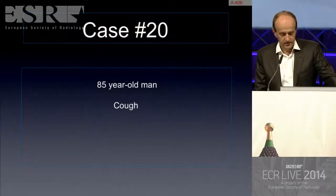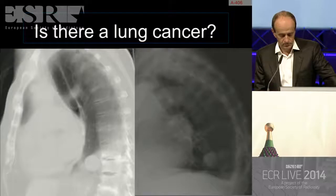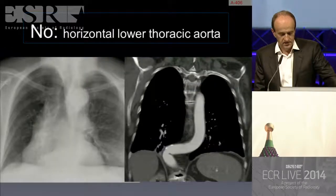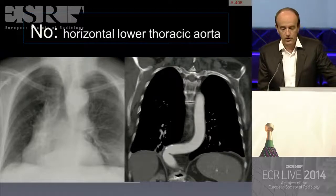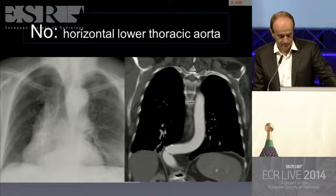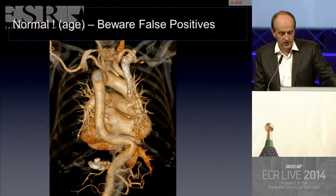Case 20: an 85-year-old man with cough. On the lateral view there is an opacity — clearly rounded and very regular — that appears to be a nodule or mass. However, this is a horizontal lower thoracic aorta mimicking a nodule. Beware false positives: in elderly patients, the aorta can be horizontal.